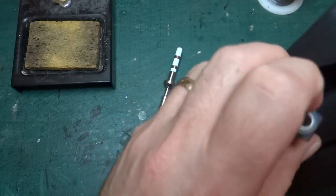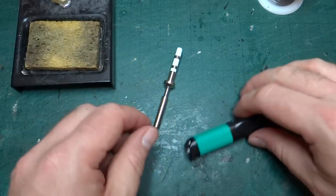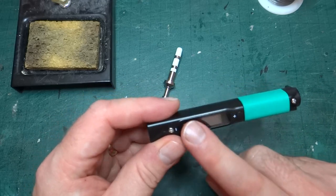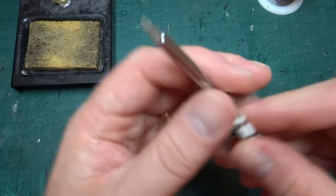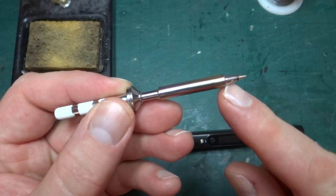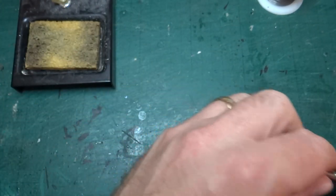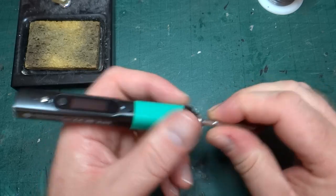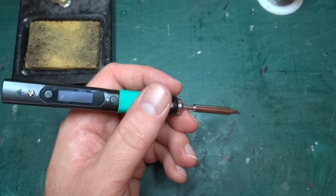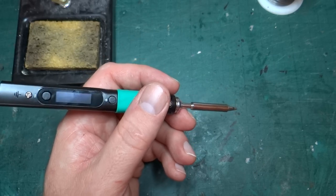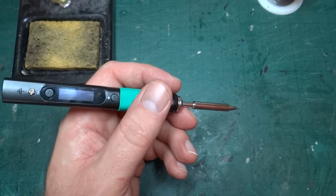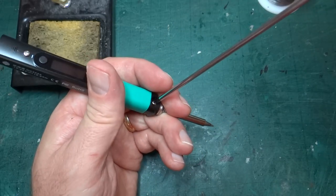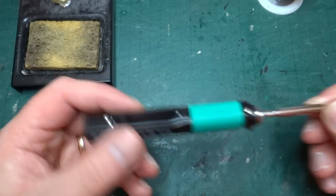You have the main body of the soldering iron which contains the microcontroller, and then you have the tip. The tips are obviously replaceable, you can get different shaped tips. This is the standard one that it comes with. To put it together you just literally slide it in. There is a screw that will hold it in place. I just tighten this up so there's less chance of it falling out in my hands.